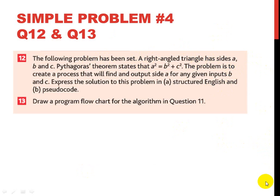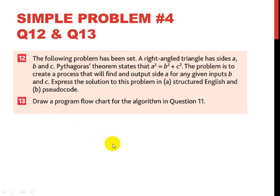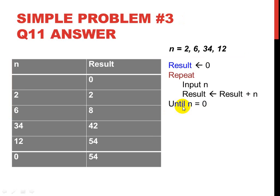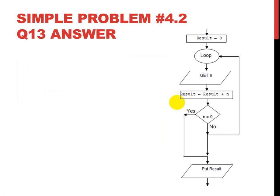Question 12: the answer uses structured English — input B and C, calculate the square root of B squared plus C squared, output the result. The pseudocode is: INPUT B, C; assign A = square root of (B × B + C × C); OUTPUT A. Please pause for question 13 — draw a program flowchart for the algorithm in question 11.